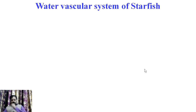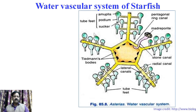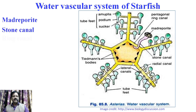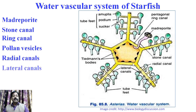The next part is the water vascular system of starfish. This is the diagrammatic representation of the water vascular system. The water vascular system of starfish is also called the ambulacral system. It is a modified hydraulic system consisting of canals filled with sea water, lined with ciliated epithelium. The parts of the water vascular system are: madreporite, stone canal, ring canal, polian vesicles, radial canal, lateral canal, and tube feet.